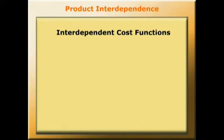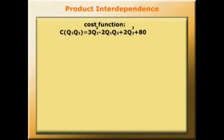How much it costs to produce one product depends upon how much of another product is also being produced. We'll illustrate this with a producer producing two different goods whose cost functions are interdependent. The costs, C, depend upon the quantities of each good produced, Q1 and Q2. We've estimated the cost function to be C(Q1,Q2) = 3Q1² - 2Q1Q2 + 2Q2² + 80, where all quantities are in thousands per week.